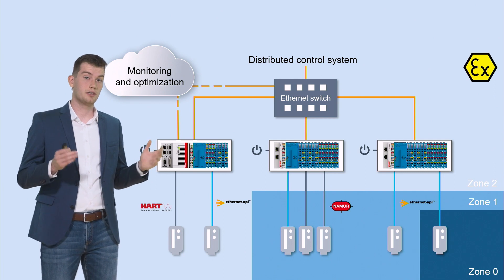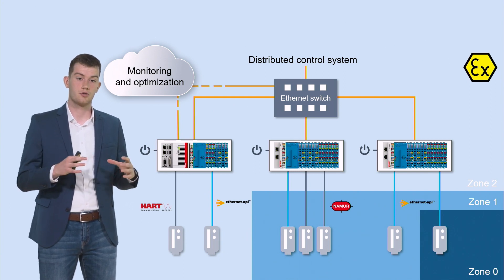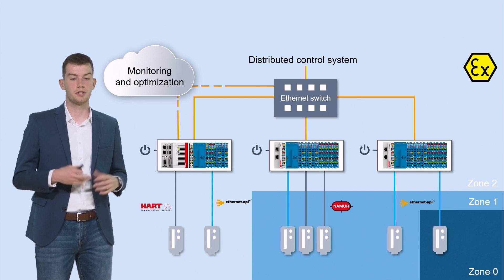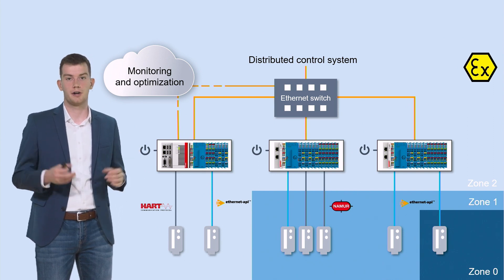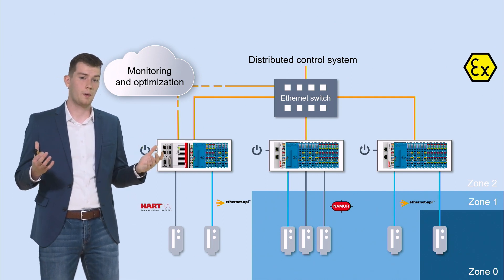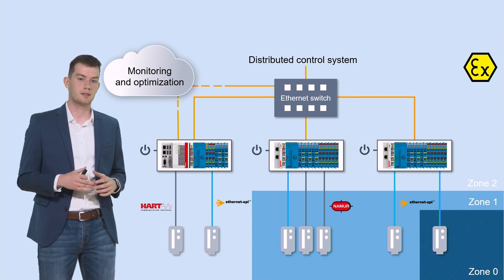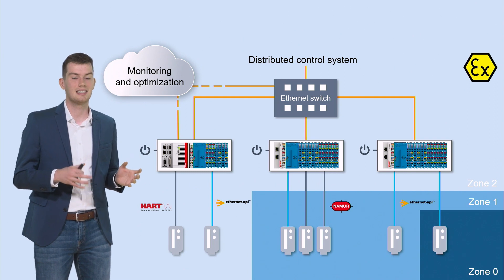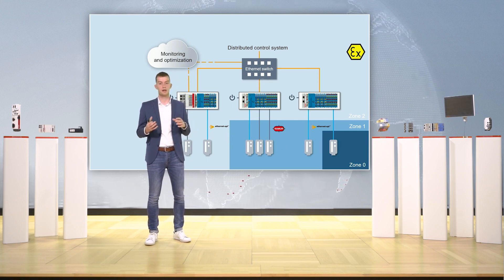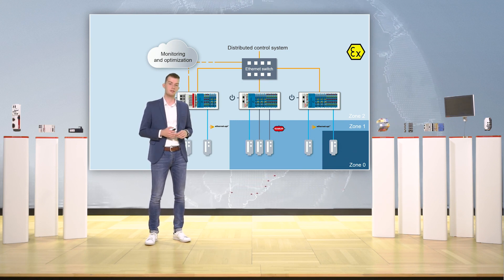As presented, we can also integrate a CX industry computer inside this terminal string and implement Namur Open Architecture (NOA), for example. The data is pre-processed and mapped, then provided via OPC UA, for example. APL has the potential to shape the future of process automation. However, there are some challenges to overcome, especially regarding communication in existing plants. The ELX 6233 supports you with exactly these problems and also creates further possibilities around the keyword NOA. Please do not hesitate to contact us if you have any further questions.